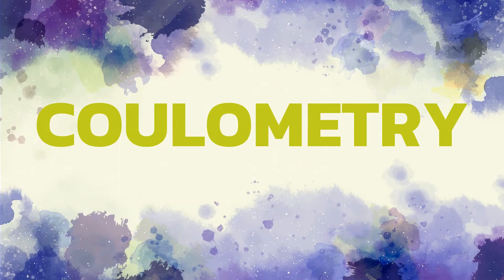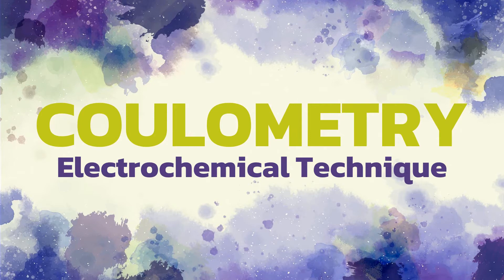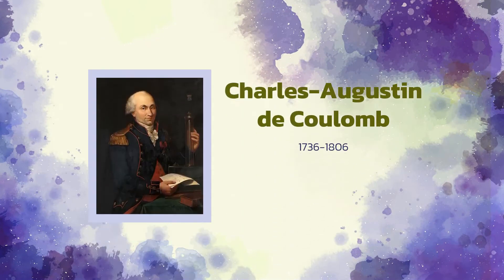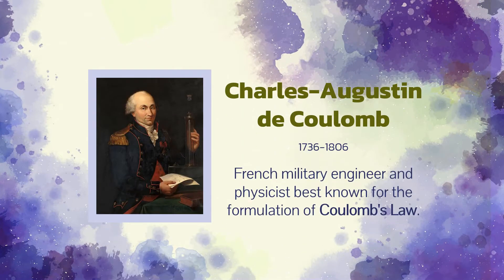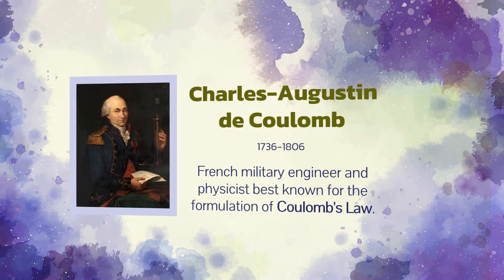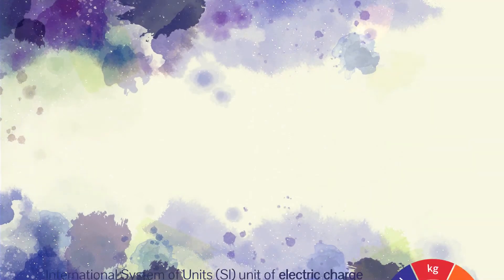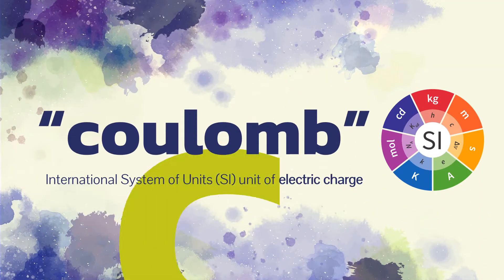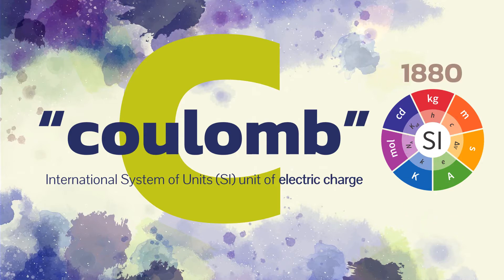Coulometry is a group of electrochemical techniques in analytical chemistry. It is named after Charles Augustin de Coulomb, a French military engineer and physicist best known as the eponymous discoverer of what is now called Coulomb's law, the description of the electrostatic force of attraction and repulsion. The SI unit of electric charge, the Coulomb, with the symbol C, was named in his honor in 1880.